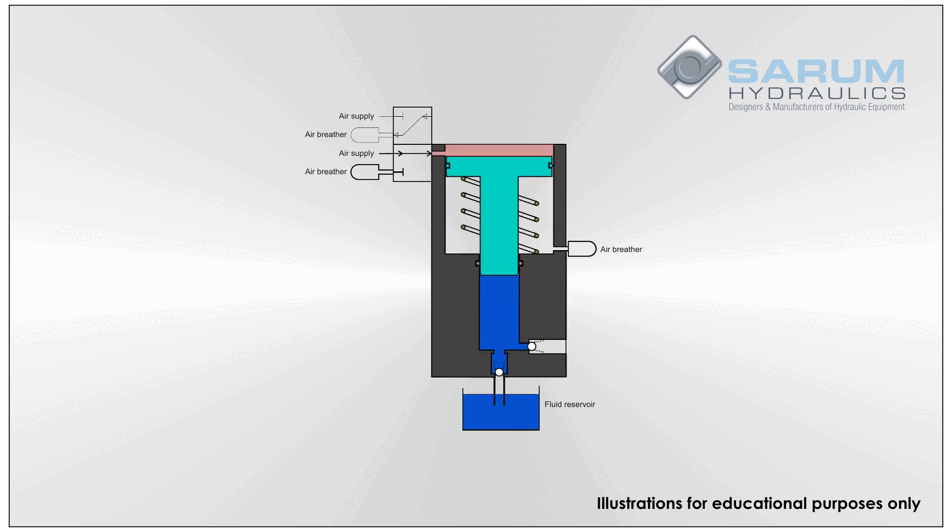Air driven hydraulic pumps cycle automatically. When compressed air is first applied to the pump, it will cycle at its maximum speed producing maximum hydraulic flow. At this stage, the pump is acting as a transfer pump filling the pressure receiver with liquid.